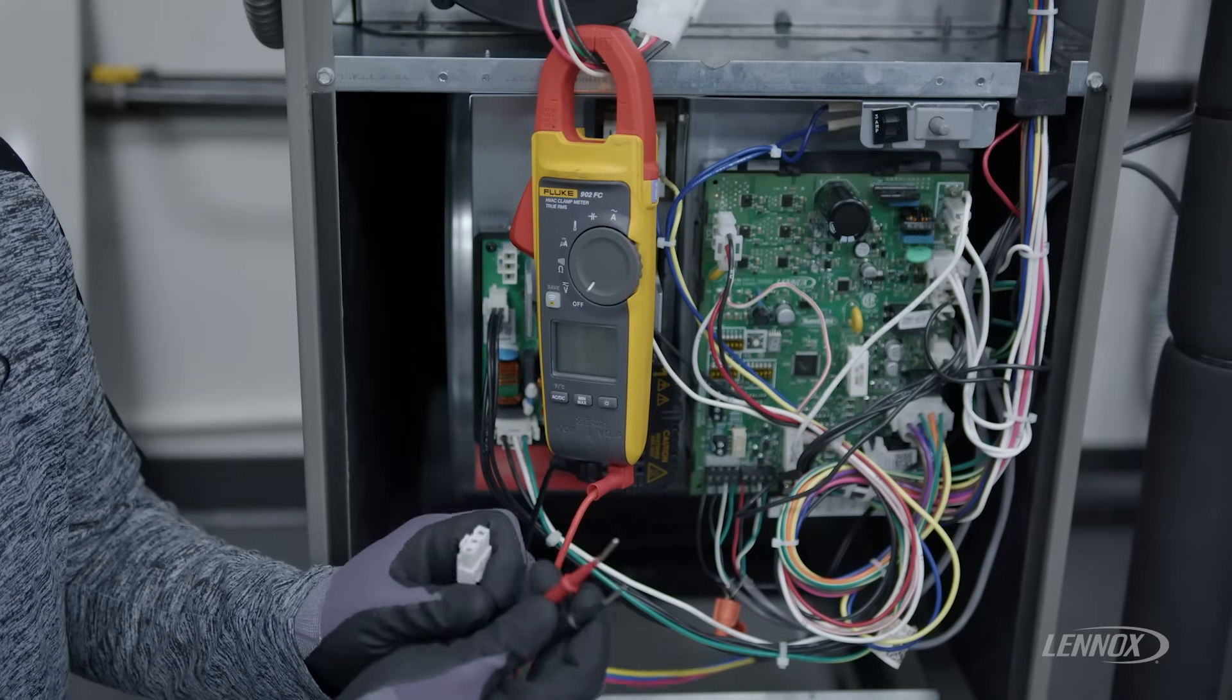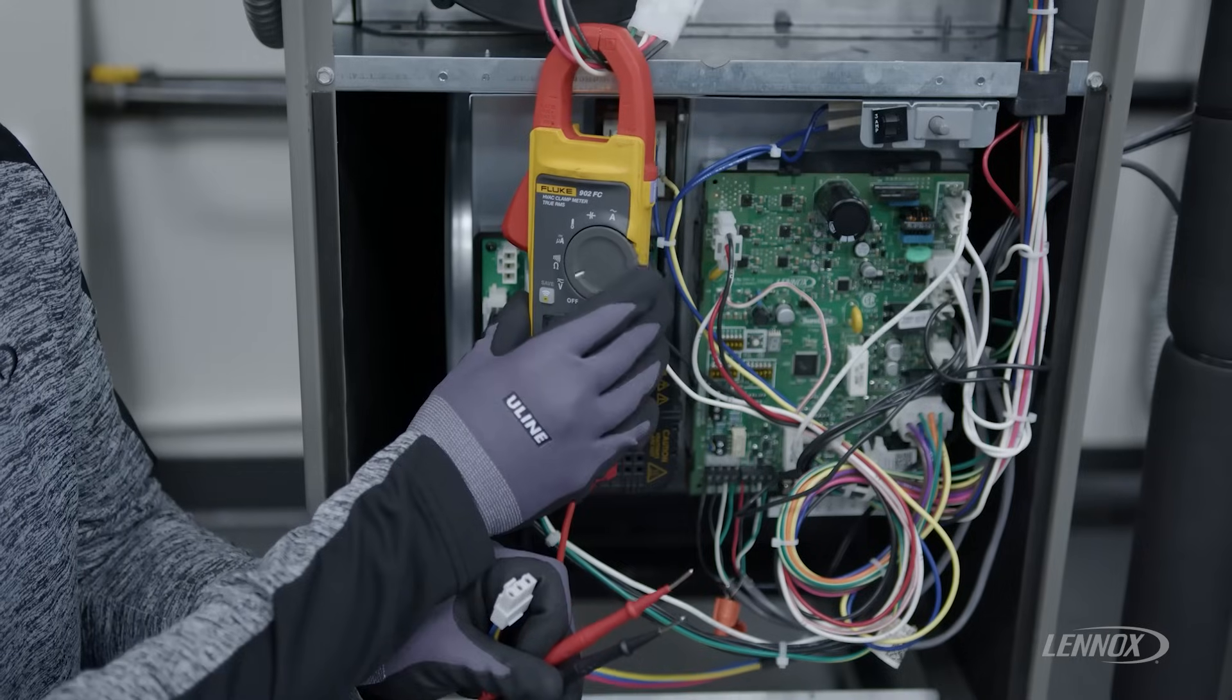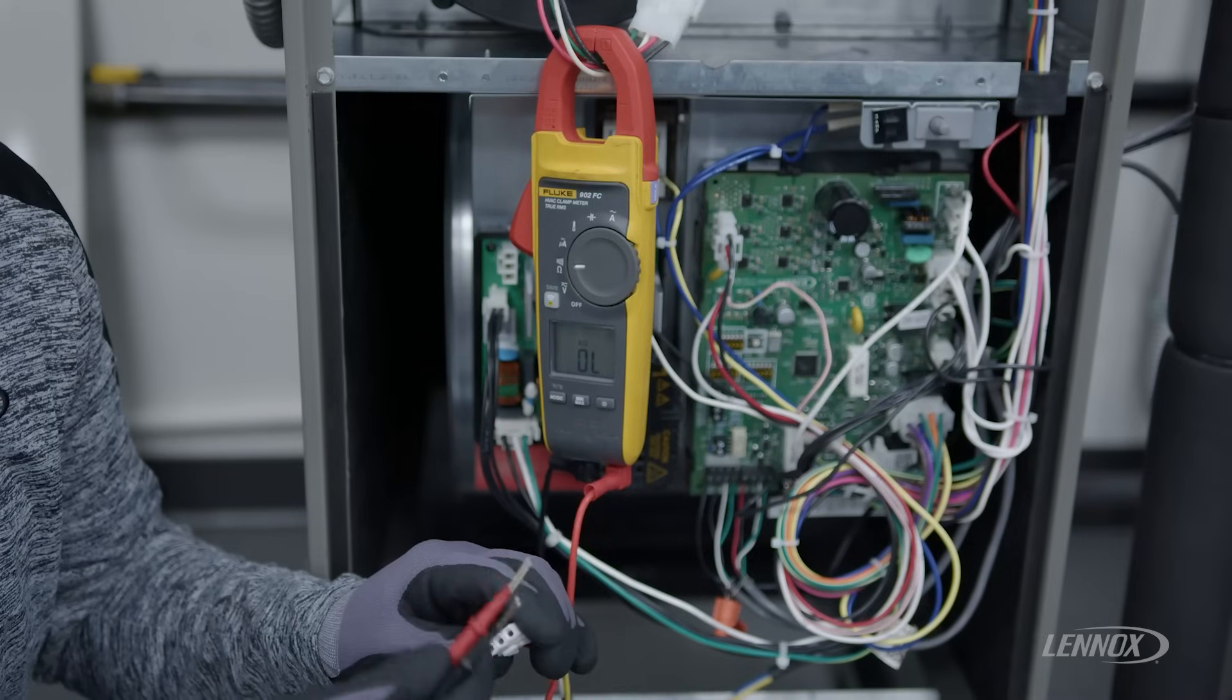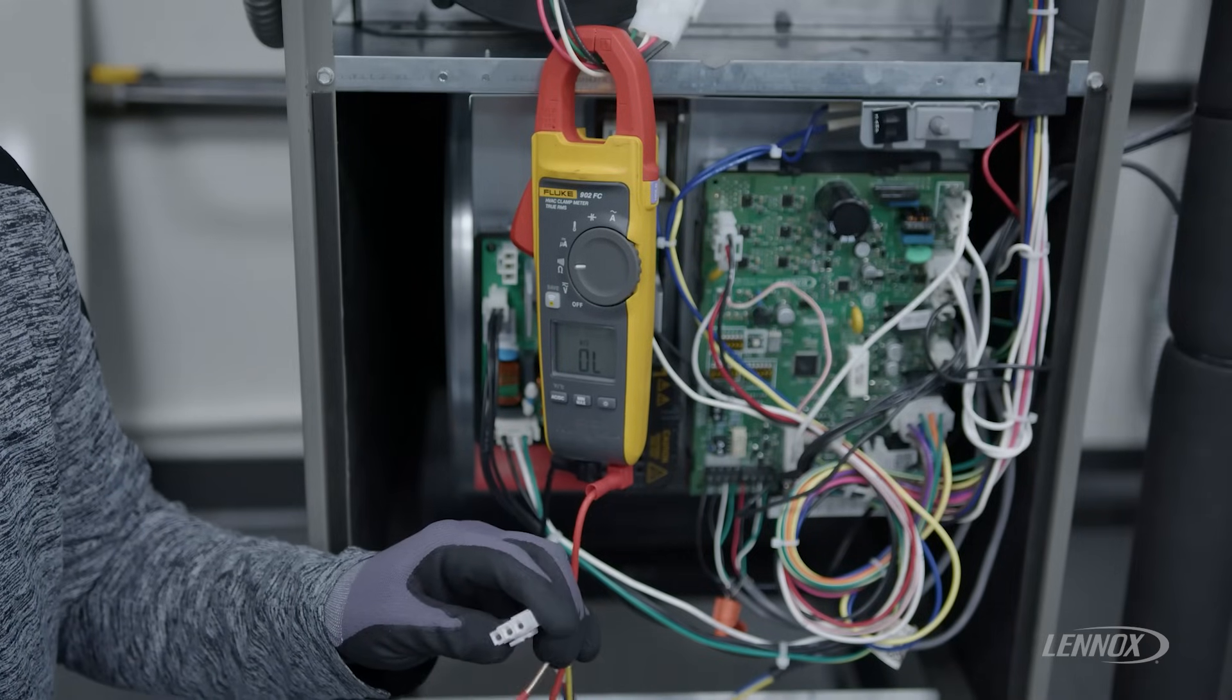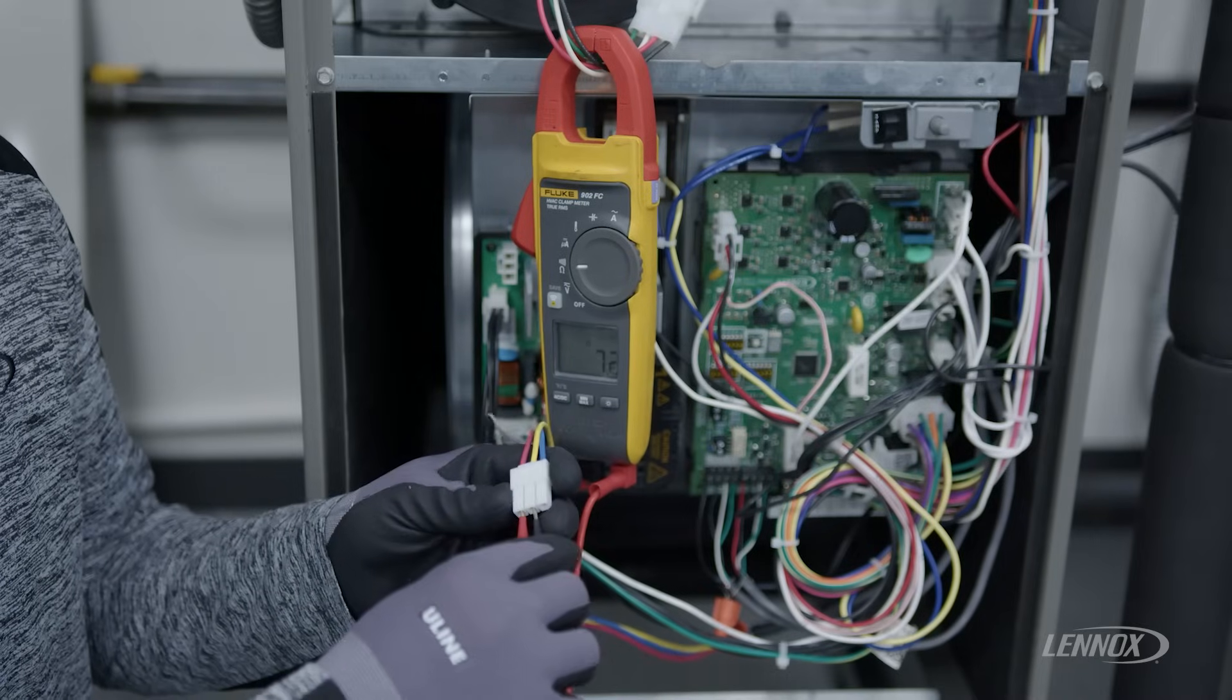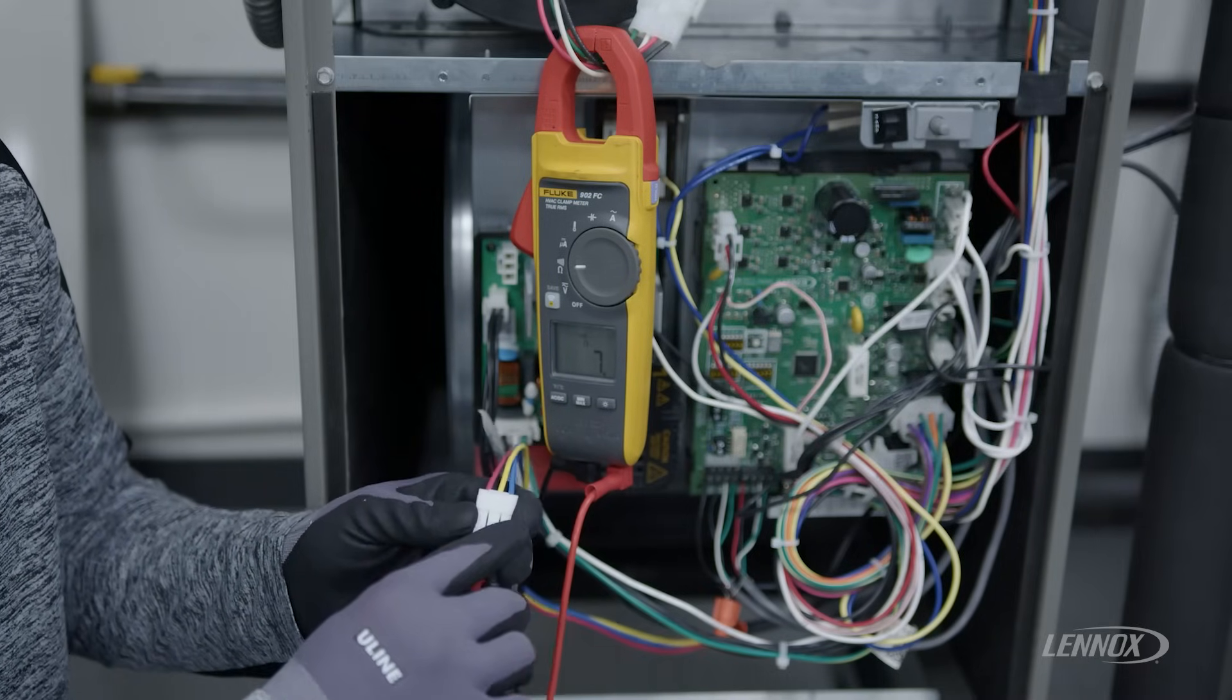To check the motor, we want to set our volt ohm meter to the ohm scale, and we want to verify our resistance reading between each winding of the motor. To do that, take each lead and go from each wire to each other wire and record your resistance.